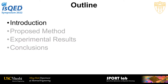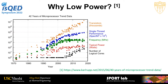Now I will start the introduction part, which will cover the introduction and also some background material. This slide shows microprocessor data for 42 years, showing that the number of transistors has increased, the number of logical cores has increased, and single-thread performance has improved. All of these increase power concerns and temperature, so we have to use low power techniques, one of which is to scale the voltage.